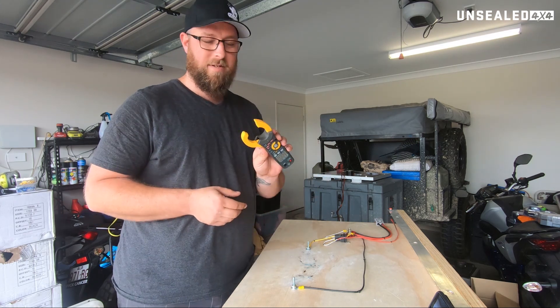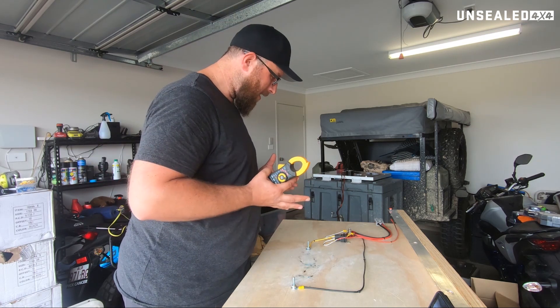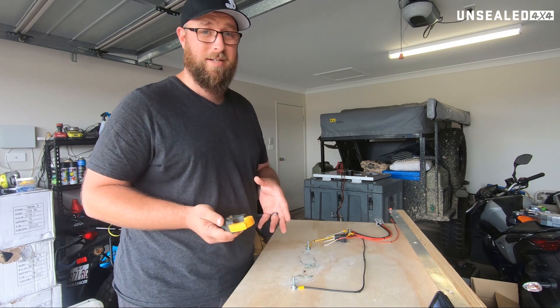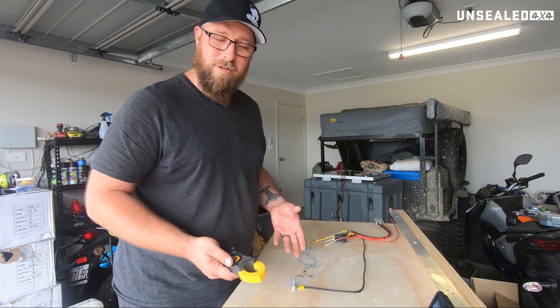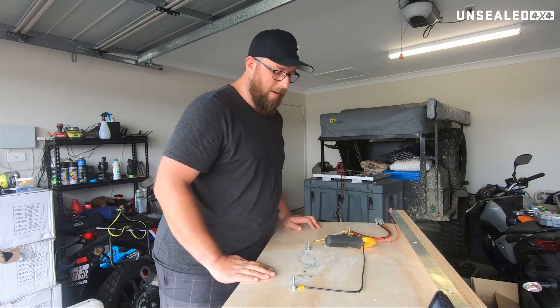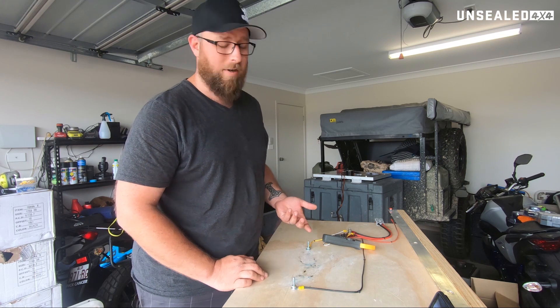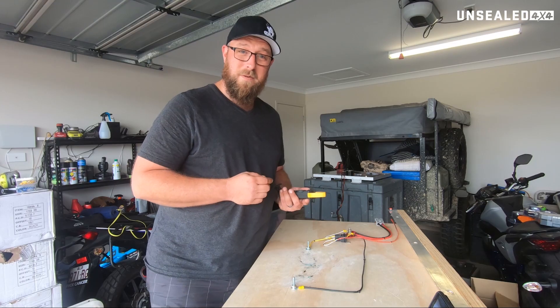So you may or may not have seen one of these. It's got a clamp on it and the beautiful thing about this is that it lets you test amp draw, current draw on your system. It works on AC as well but we're just going to use it for DC. You don't need to break the circuit to do it. You can literally have a circuit powered up, put the clamp meter around the wire and it'll tell you how many amps you're drawing. So let's get into showing you how they work and what they do.